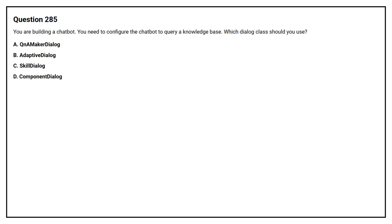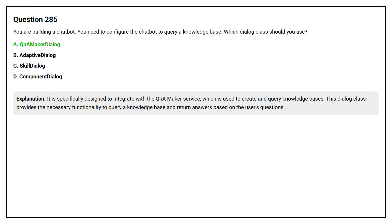Option number 285. You are building a chatbot. You need to configure the chatbot to query a knowledge base. Which dialogue class should you use? Option A: Q&A Maker Dialog. Option B: Adaptive Dialog. The correct answer is Option A: Q&A Maker Dialog. It is specifically designed to integrate with the Q&A Maker service, which is used to create and query knowledge bases. This dialog class provides the necessary functionality to query a knowledge base and return answers based on the user's questions.